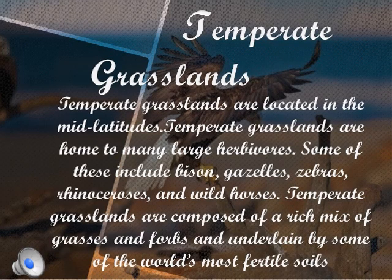Temperate grasslands are located in the mid-latitudes where rainfall is inadequate. These areas are treeless with grasses of varying height. The temperature varies between minus 20 degrees Celsius in winter and 21 degrees Celsius in summer. These grasslands have short grasses with scattered trees like willow, alder, and poplar. Animals like prairie dogs, coyotes, kangaroos, ostriches, and emus can be seen here.